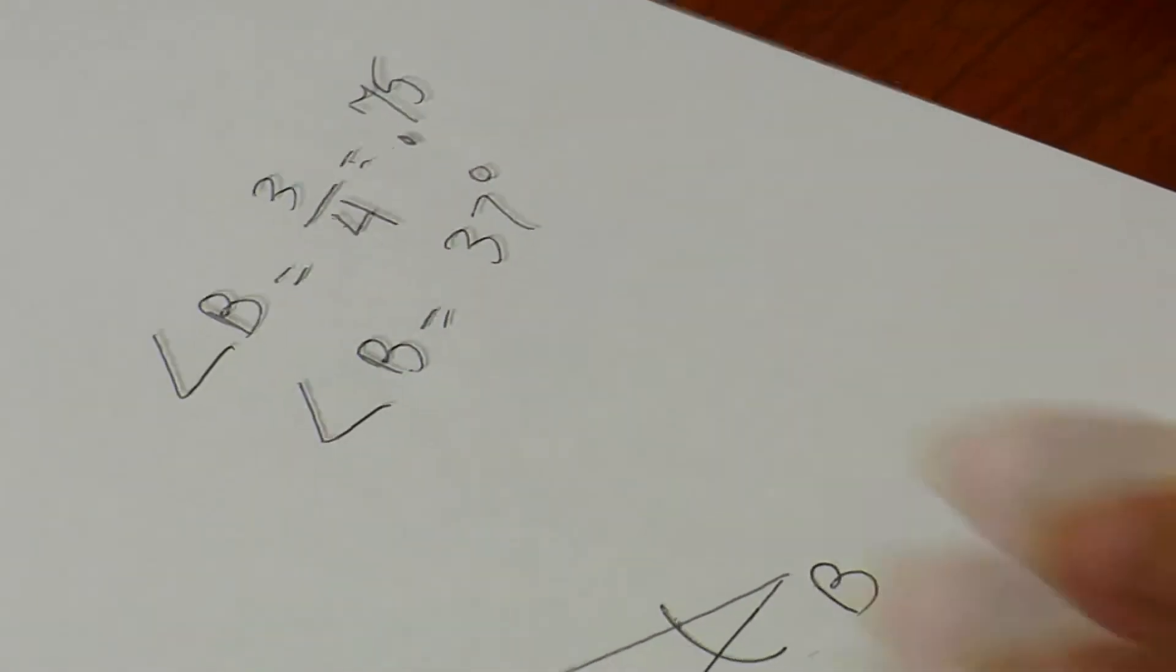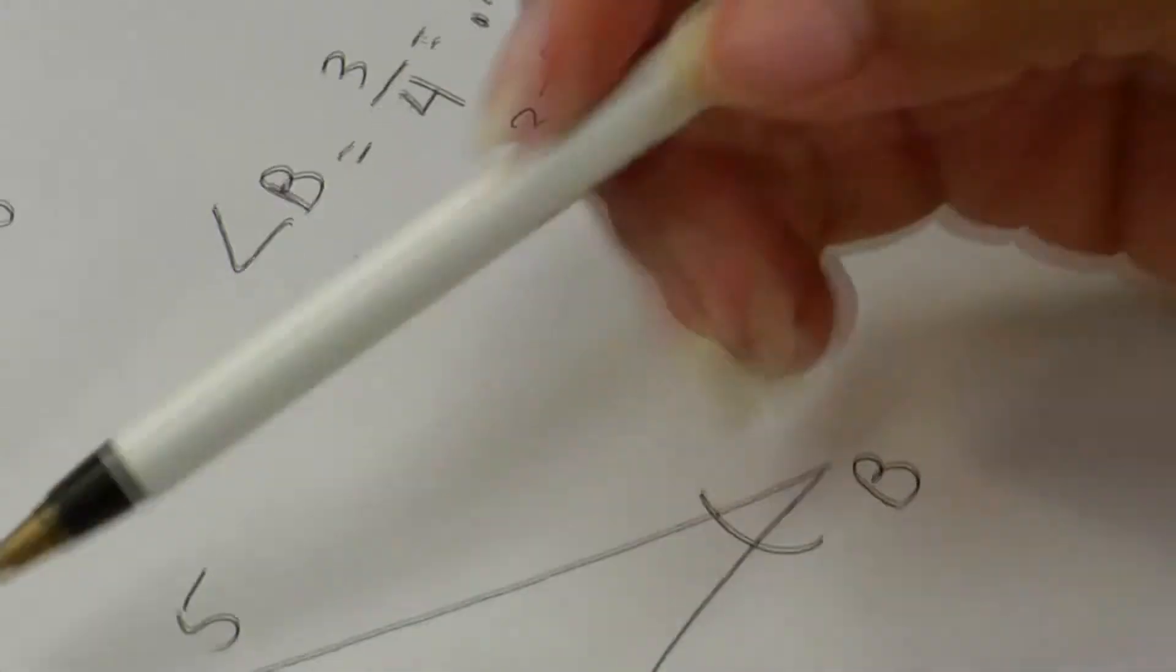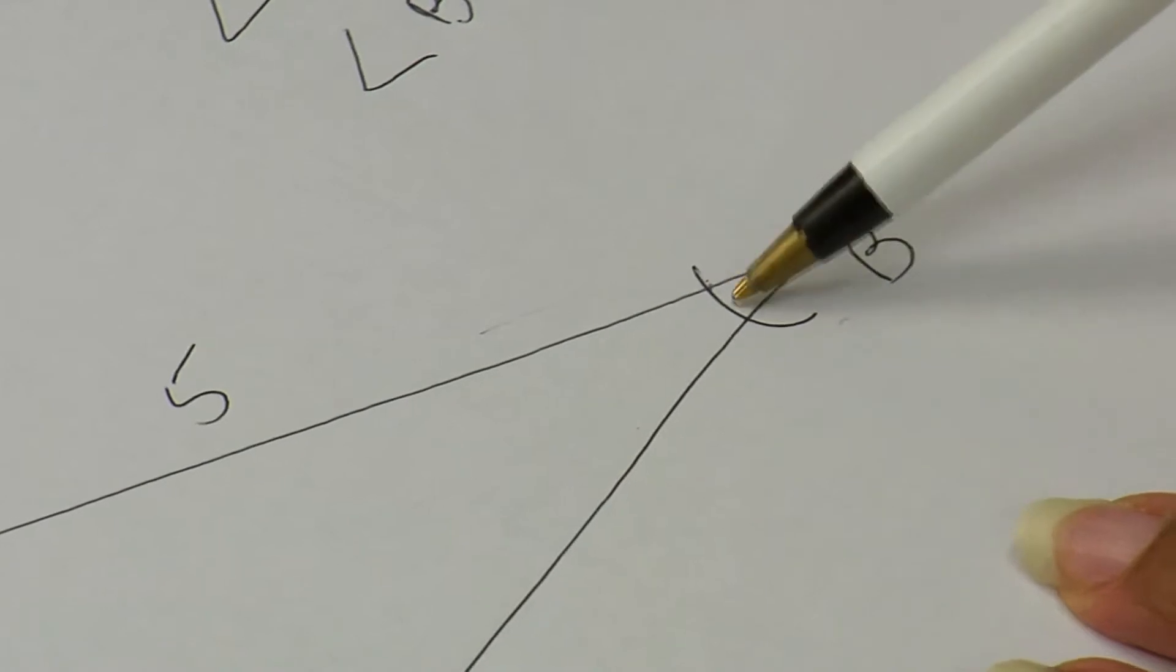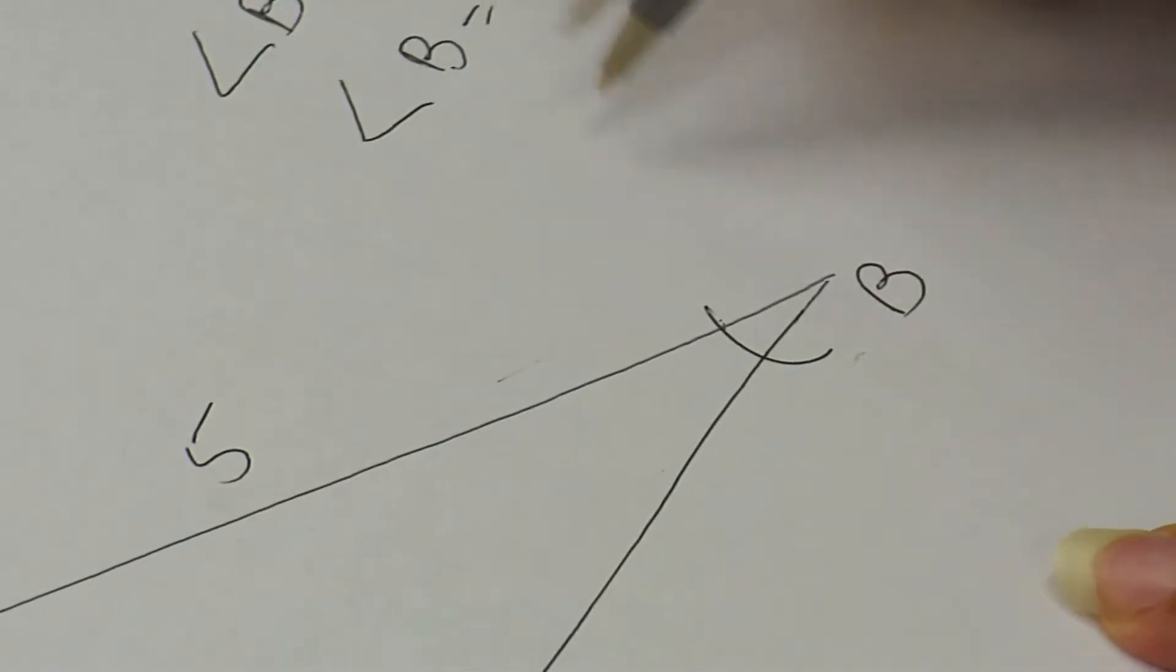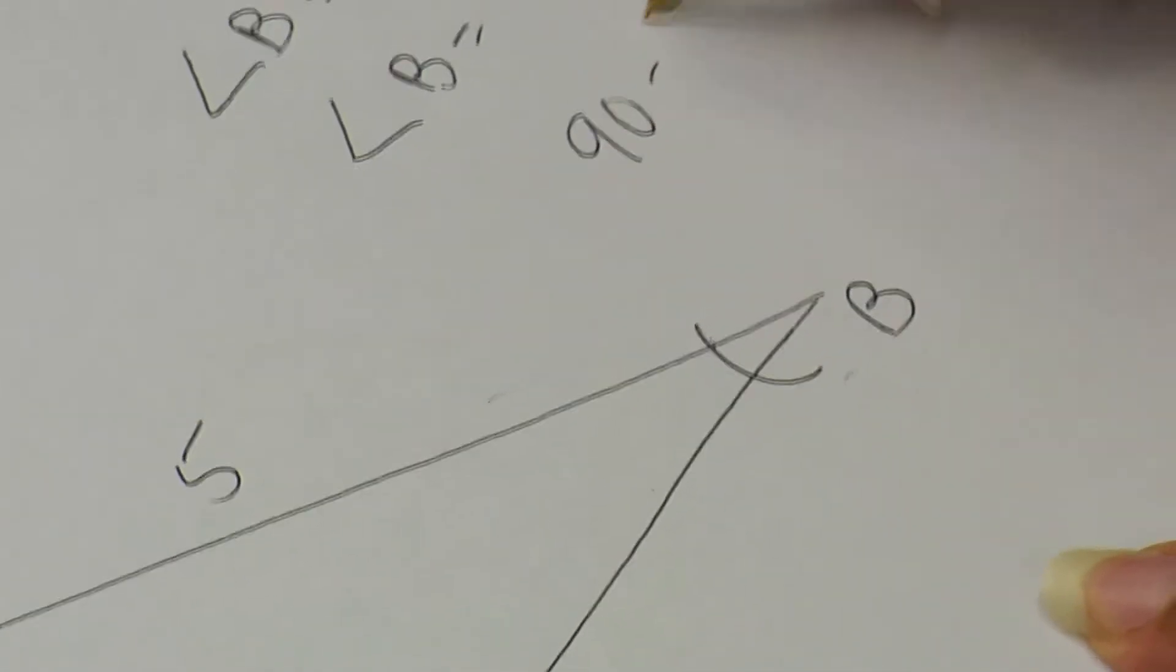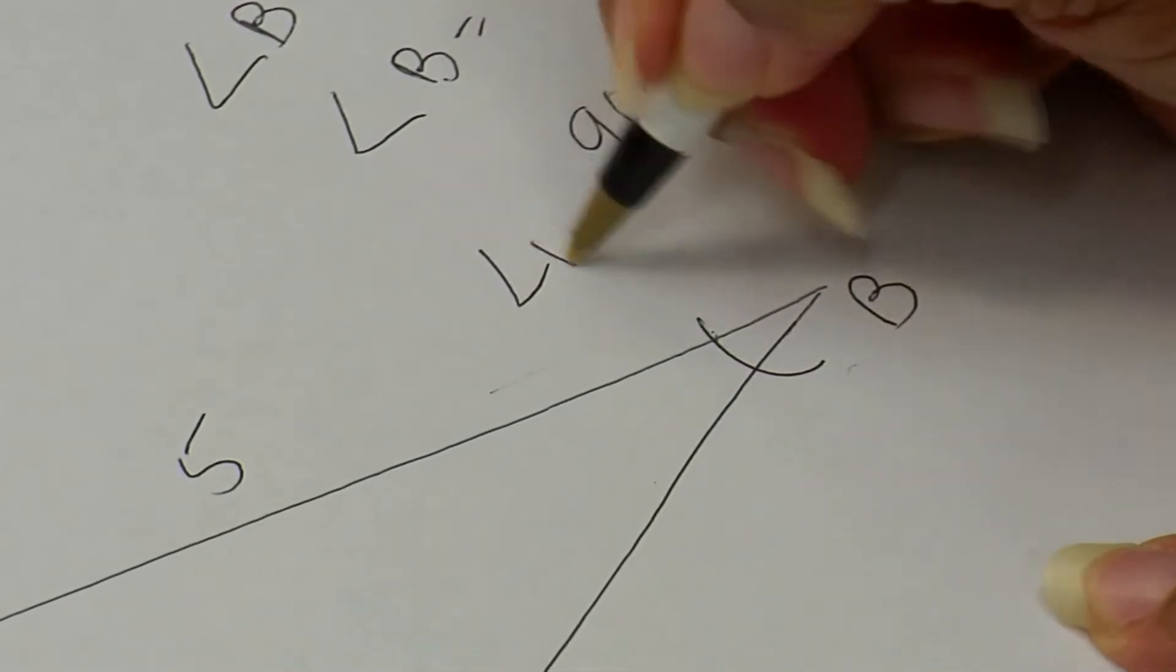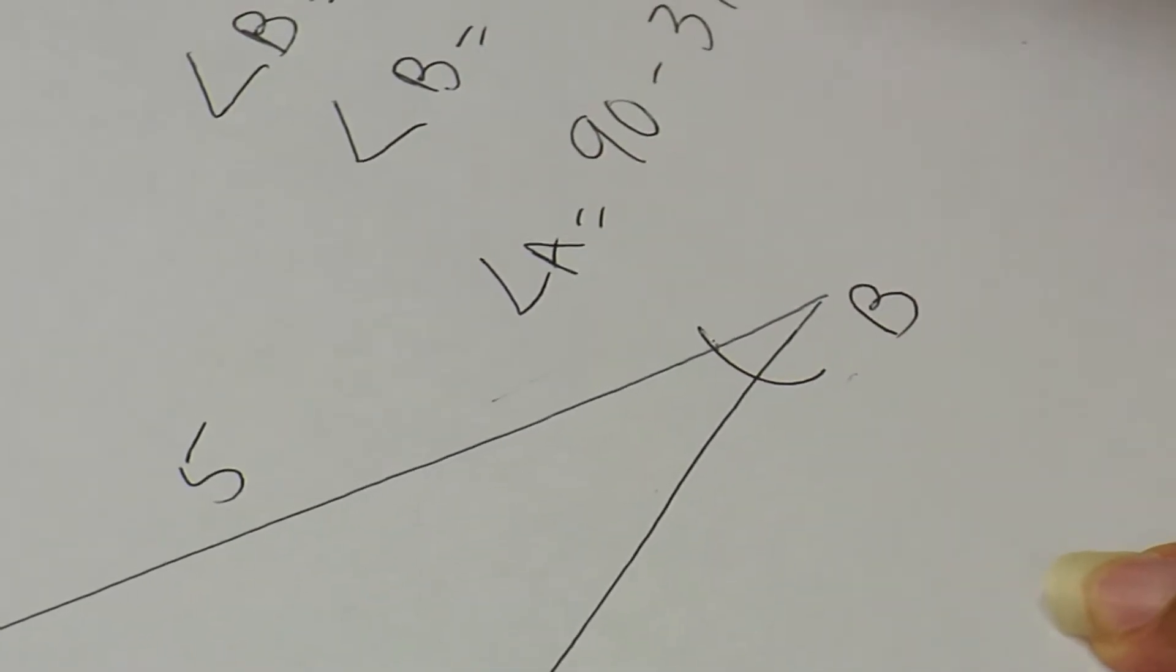To get my remaining angle, the other acute angle, then 2 here with total 90 degrees. I could either say 90 minus 37 degrees, which would give me for angle A as a 53 degree angle.